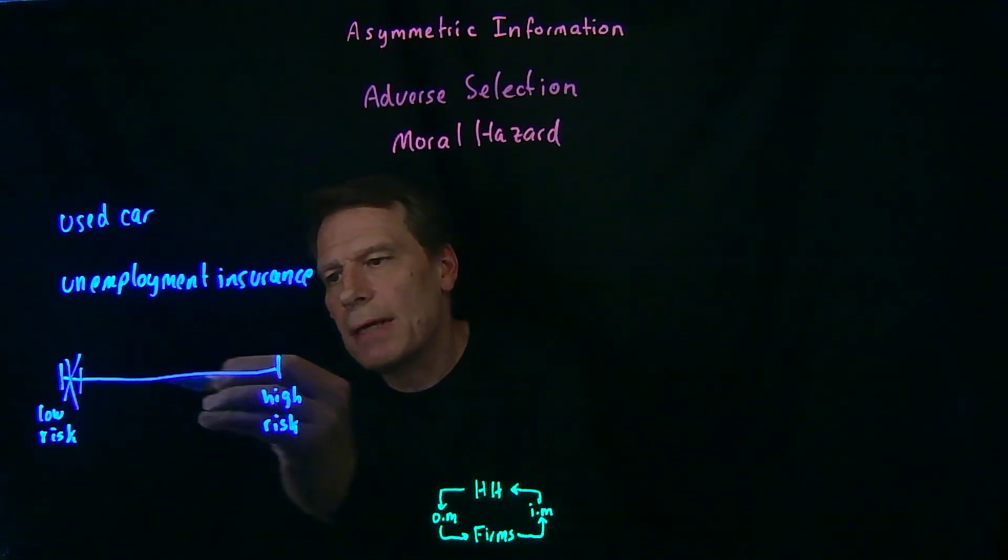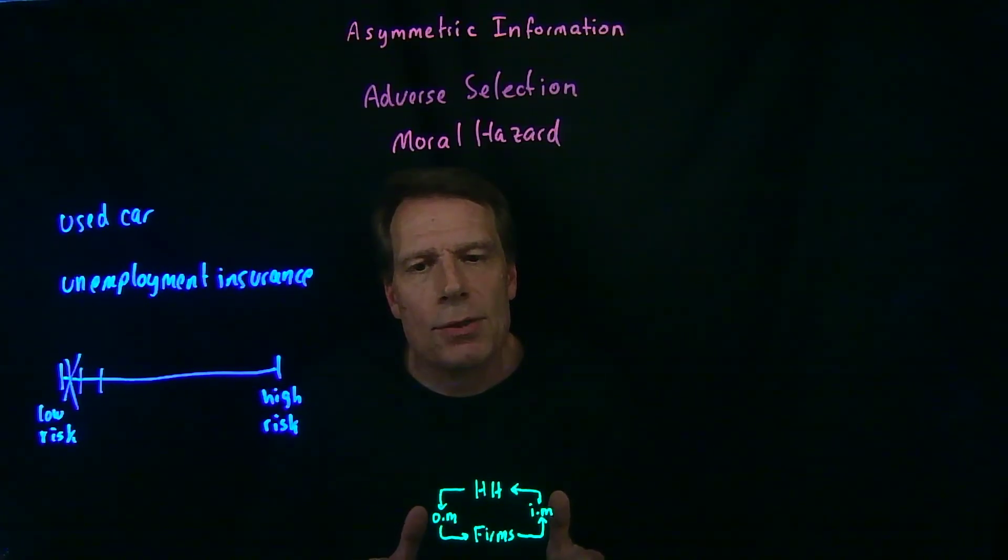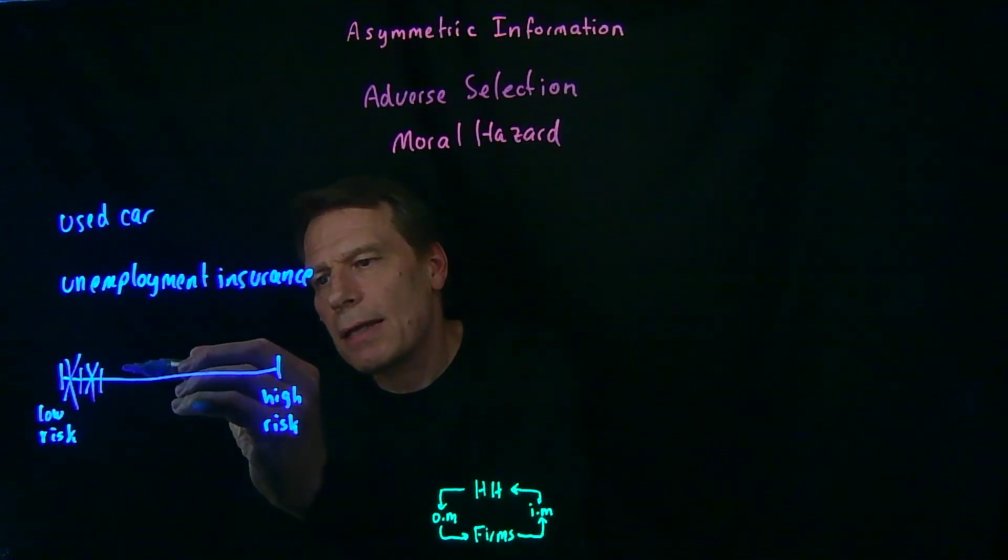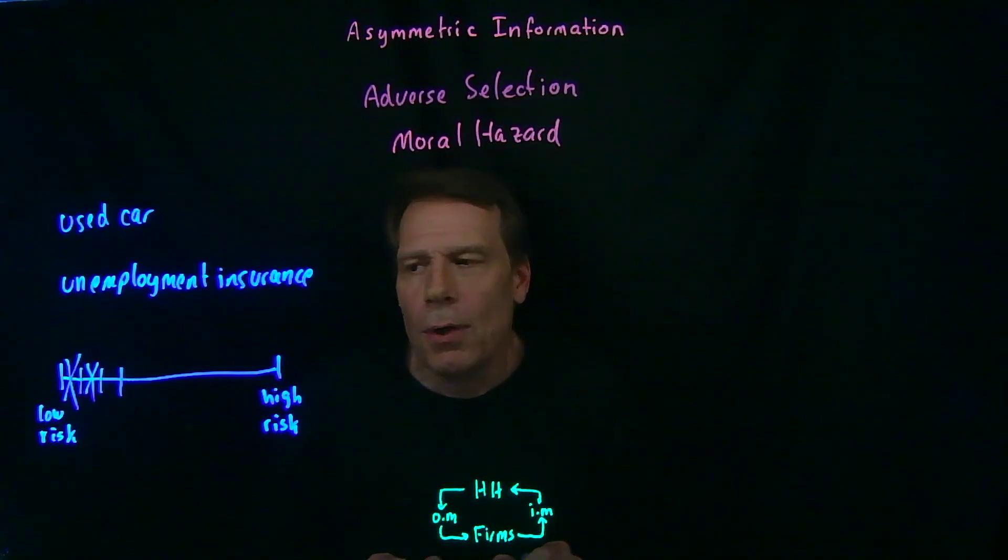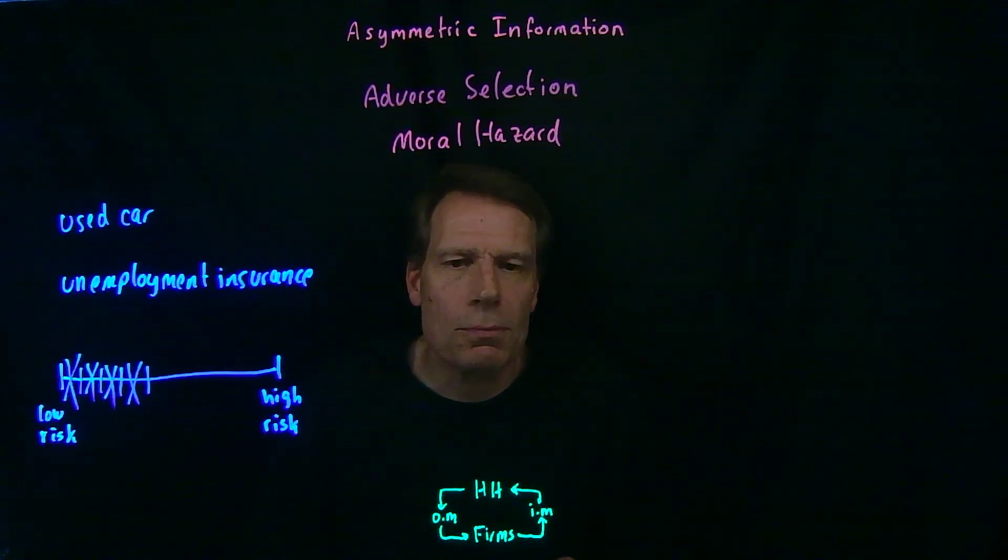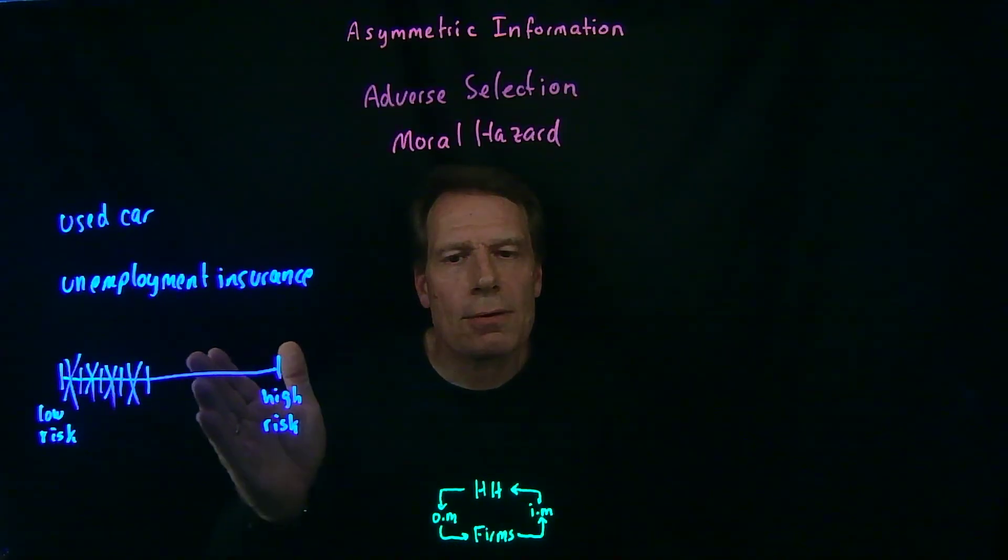And as those premiums go up, there'll be another segment of relatively low-risk workers who'll say it was worth buying the insurance at the old price, but at this new price it's not worth it, so they're going to drop out of the insurance market. That creates more adverse selection, which puts more upward pressure on the price of premiums. And as those premiums go up, there'll be another set of moderately risky workers who'll decide the insurance is not worth it, it's too expensive, and they'll drop out of the market. But that causes more adverse selection, it causes premiums to rise more, and another section of this continuum drops out of the market. You can see how the entire market might unravel because of this increasing adverse selection.